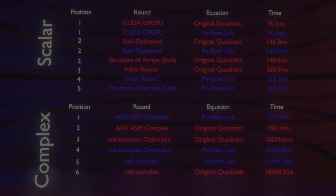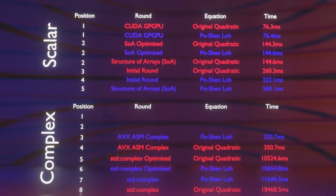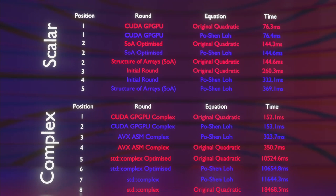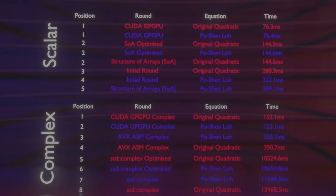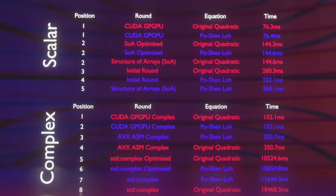Red has taken it again! The original quadratic wins the final round of CUDA complex numbers. The times are very close together, but the graphics card is so consistent that even a small win is statistically significant enough to call it. The original quadratic has won this round. And that is all of the tests.